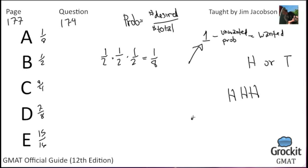So one minus the probability of the thing that we don't want to happen, the unwanted probability, that one in eight chance of heads, heads, heads, one minus one eighth equals seven eighths. Answer choice D.